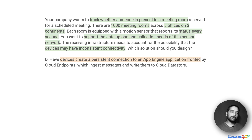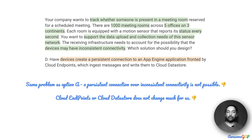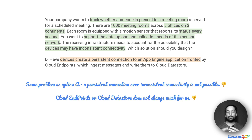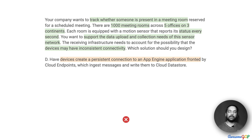Option D suggests having devices create a persistent connection to an App Engine application frontend using Cloud Endpoints, which ingests messages and writes them to Cloud Datastore. Again, we have the same problem of a persistent connection over an inconsistent network — that is difficult to achieve. You could possibly use web sockets, but we would ideally prefer a simpler, cleaner solution. Moreover, App Engine and Cloud Datastore are also regional solutions, and just using them doesn't change much for us. So we eliminate Option D as well.